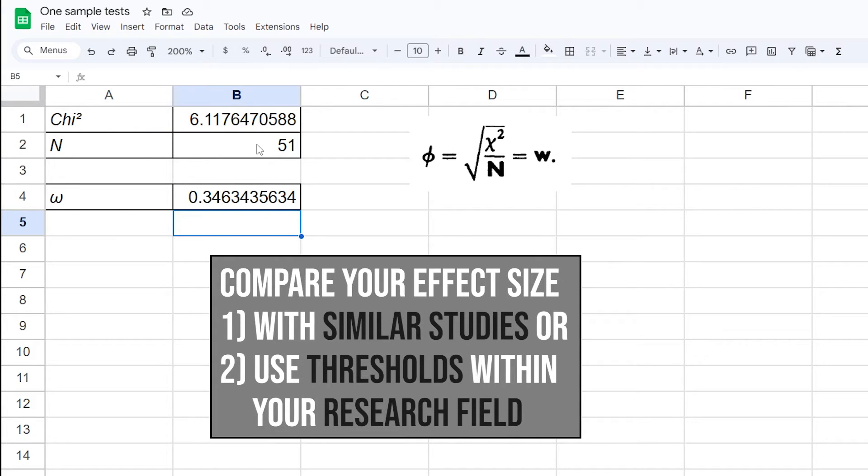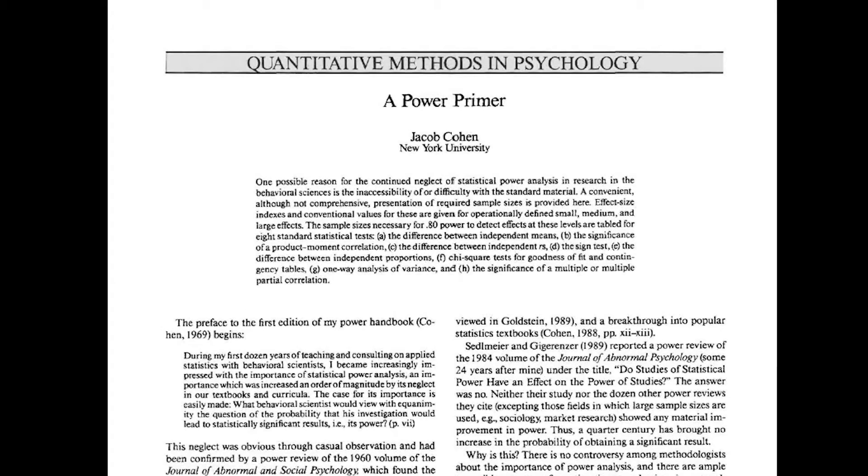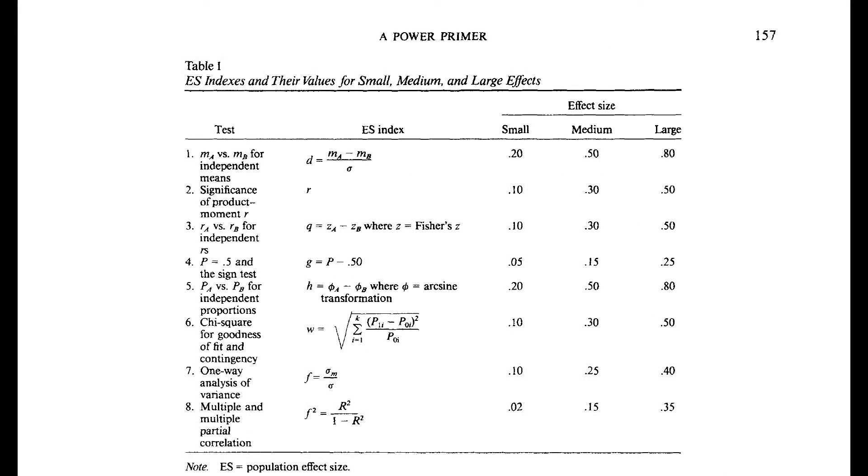If similar studies in your research field exist compare your effect size with the given one. If no comparable study exists use the common thresholds within your research field. If those are also non-existent you can refer to Cohen 92 a power primer. Page 157 shows three thresholds for the effect size Omega.